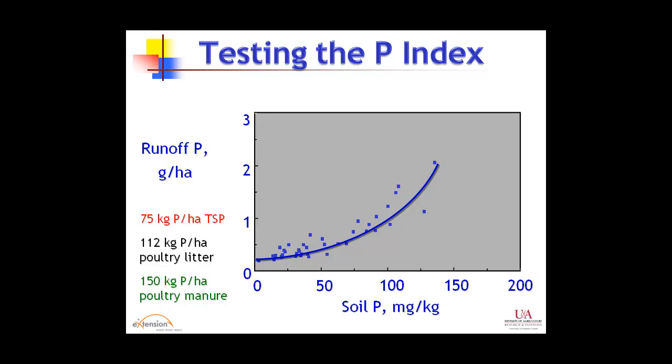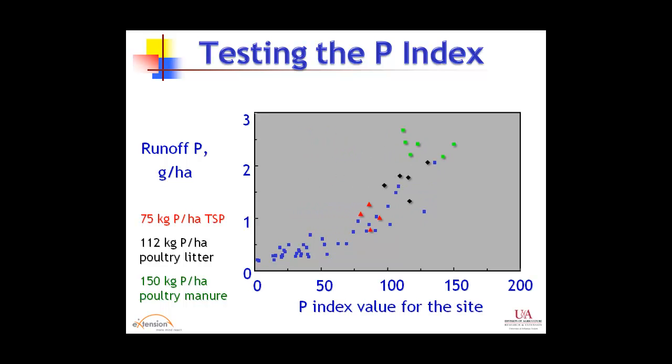Some work has been done with testing, but not a lot. When you apply fertilizers - whether triple superphosphate or others - the data points don't fall on the soil-phosphorus-only line. But when you change from soil phosphorus to an index, accounting for the application - timing, rate, and method of application - they tend to line up better because it enters into that equation or tool of management, and you get a better estimate of the loss of phosphorus. This is on a loss basis.